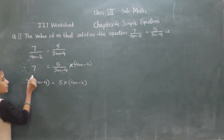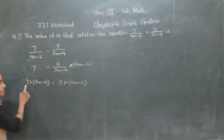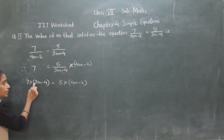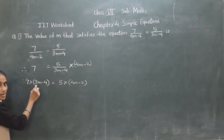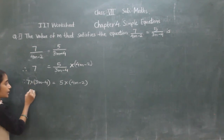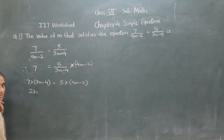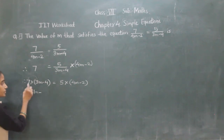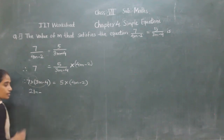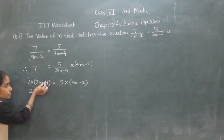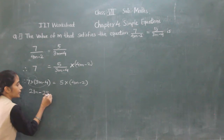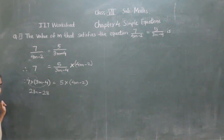So now 7 multiplied by 3n: 7 threes are 21, so 21n. Then minus — 7 fours are 28, and compared to this minus here, so minus 28.